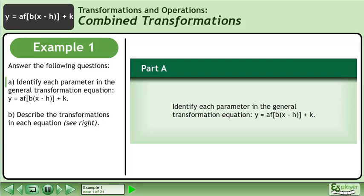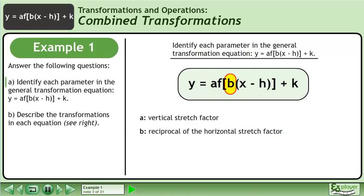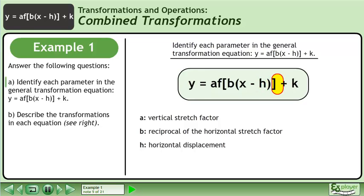Identify each parameter in the general transformation equation y equals a times f of bx minus h plus k. a is the vertical stretch factor, b is the reciprocal of the horizontal stretch factor, h is the horizontal displacement, and k is the vertical displacement.